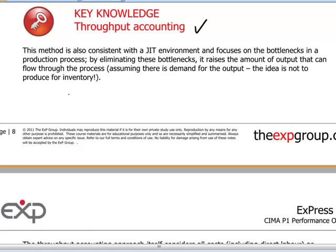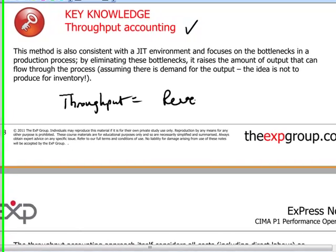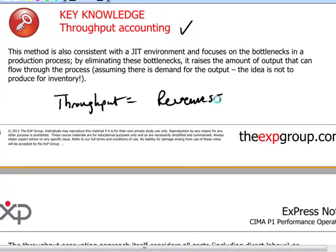Throughput is defined as revenues minus the total, let's call it totally variable costs.